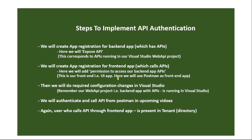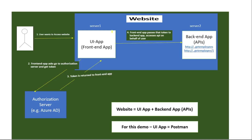In this video, let's understand the steps to implement API authentication. A quick recap: this user wants to access a website which internally contains two different apps — a UI app or front-end app developed in React or Angular, and a back-end app with APIs. So the website is UI app plus back-end app. When the user accesses the website, they indirectly access the UI app only.